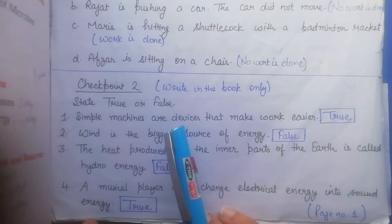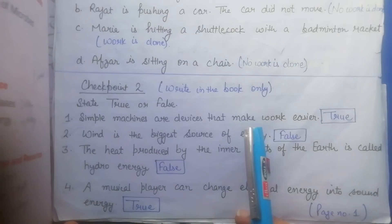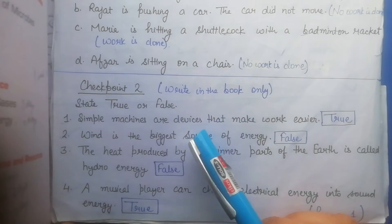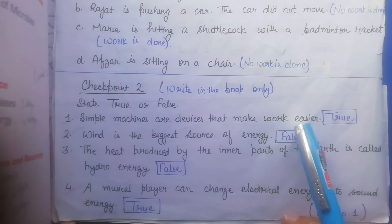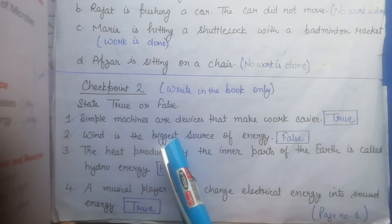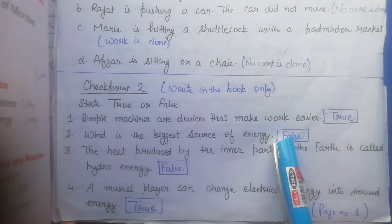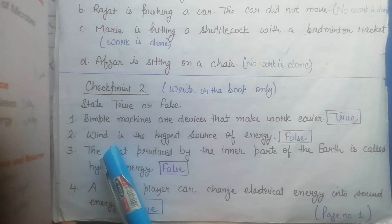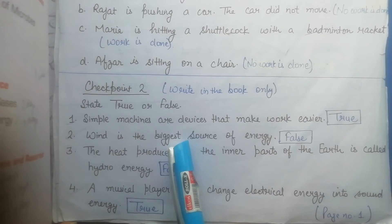To make work easier, this is true. Simple machines are devices that make work easier. Wind is the biggest source of energy, this is false. The biggest source of energy is the sun. Wind is an energy source, but the biggest source is sun.